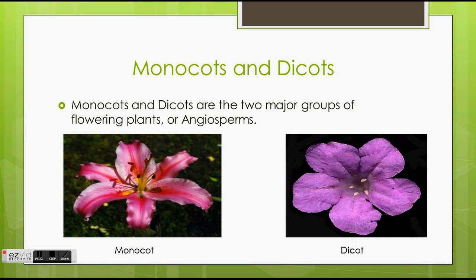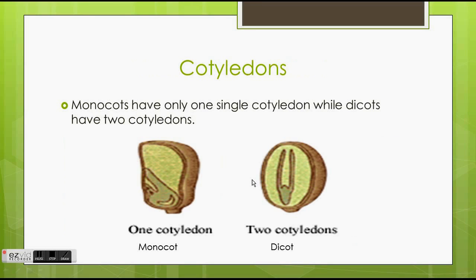On the left you see an example of what a monocot flower would look like, and on the right you see an example of what a dicot flower would look like. Cotyledons: monocots have only one single cotyledon, while dicots have two cotyledons.